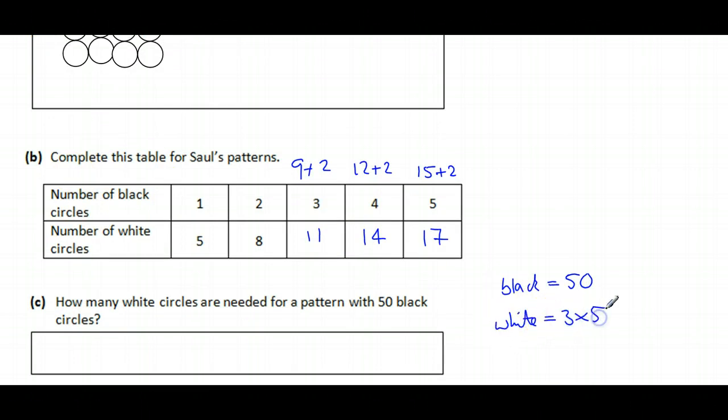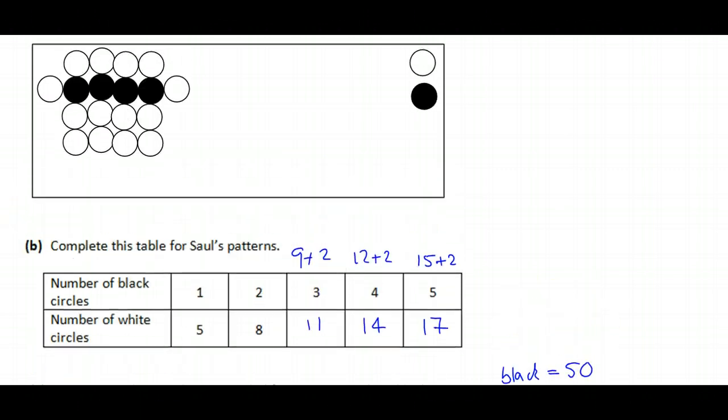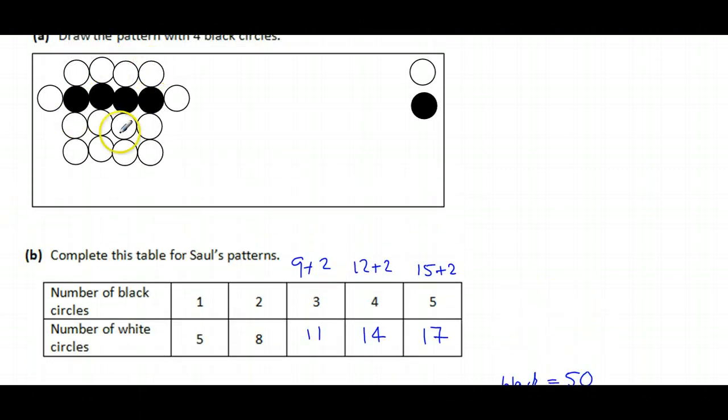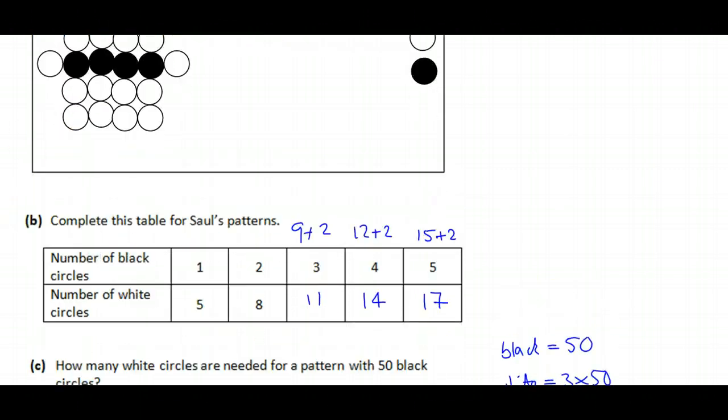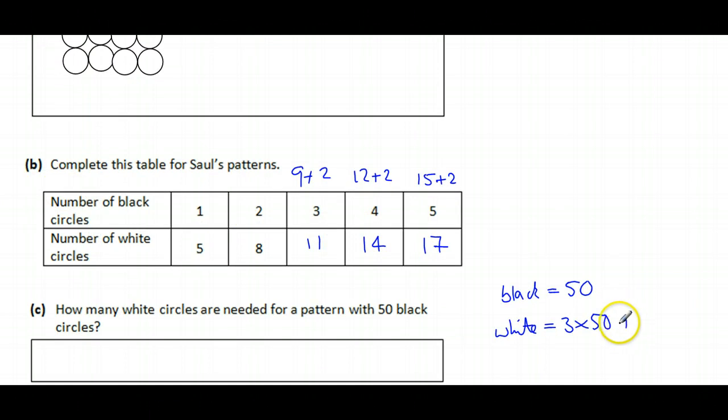We're going to get three times 50. We're going to get a row above, a row below, and a row at the bottom. Plus we're going to get the two little arms, the left and right. So the number of white circles is going to be 152.